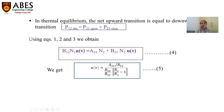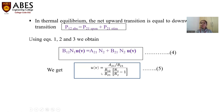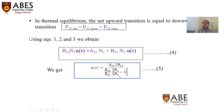Adding these two terms in thermal equilibrium: the rate of absorption equals the rate of emission. The probability of absorption from level 1 to level 2 equals P21(spontaneous) plus P21(stimulated). Using these equations, we get the energy density through calculation — equation 5 — which is: A21/B21 divided by [(B12/B21)(N1/N2) − 1].